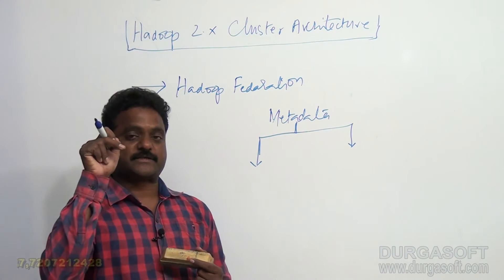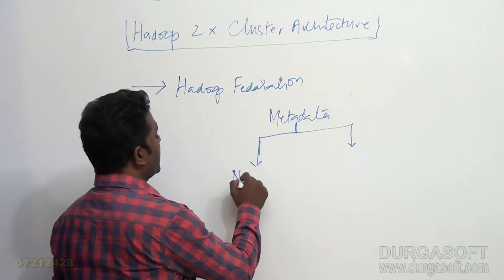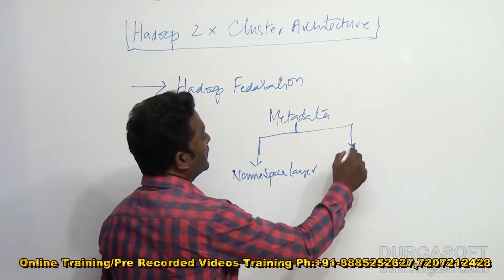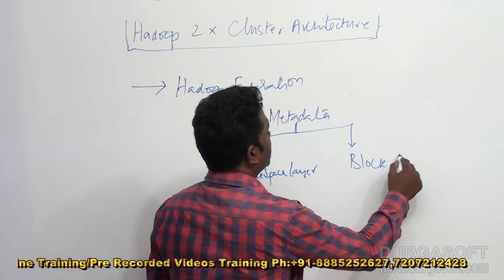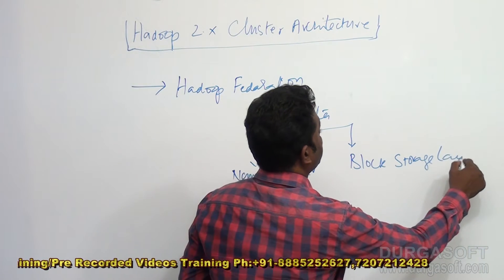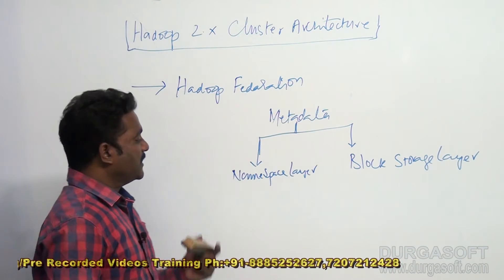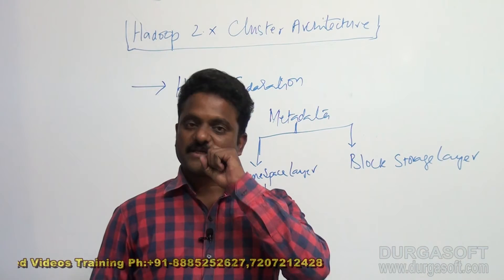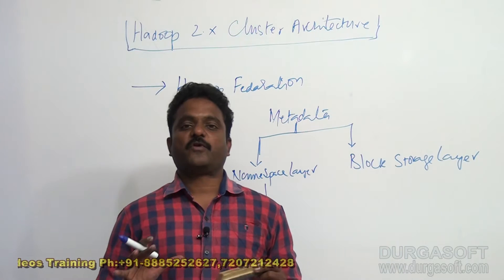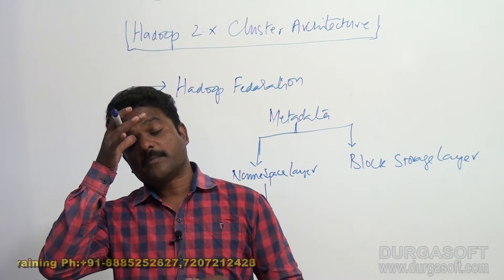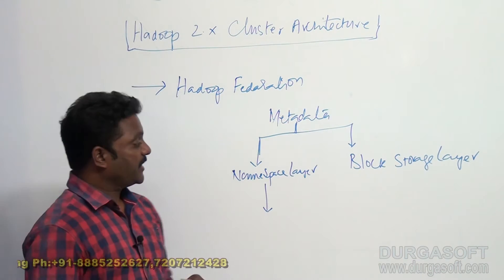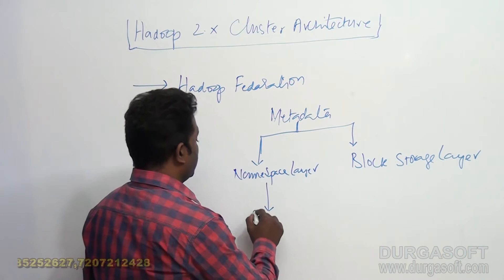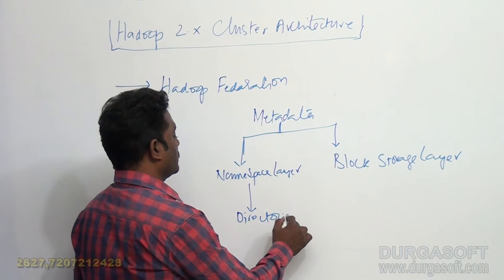This is inside the namenode on a cluster. We have something called the namespace layer and the block storage layer. Now, what do we have inside a namespace? Inside a namespace, we have all the information pertaining to blocks and folders — where a particular block or file exists. Inside a namespace, you have information about the directories and files, meaning it manages directories and files.